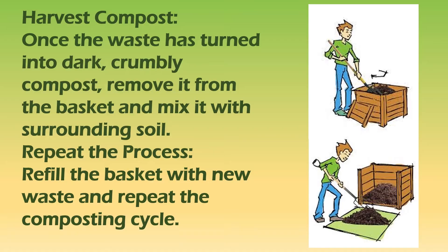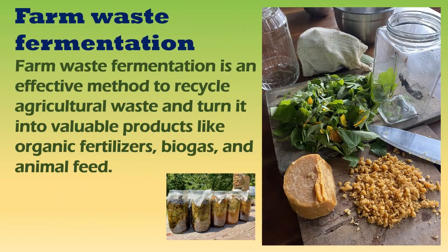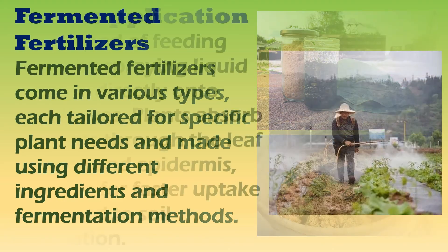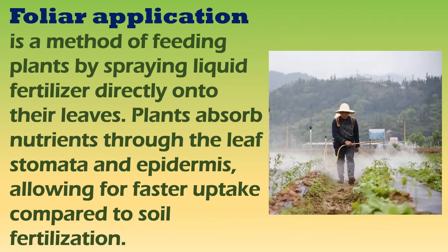Harvesting compost ensures your plants get the nutrients they need to grow strong and healthy. Another topic is farm waste fermentation — an effective method to recycle agricultural waste and turn it into valuable products like organic fertilizers, biogas, and animal feed. Fermented fertilizers come in various types, each tailored for specific plant needs and made using different ingredients and fermentation methods.